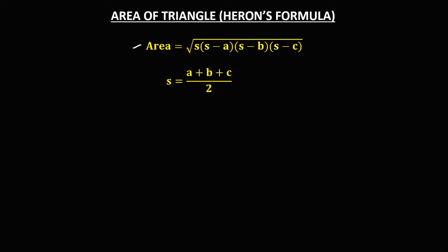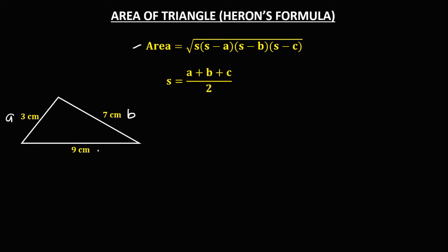Take note that we can only use Heron's Formula if the given values are the three sides of a triangle. So for this given triangle, let's assume this is side a, this one is side b, and this one is side c. First, we need to solve for s using this formula, so s equals (a plus b plus c) over 2.